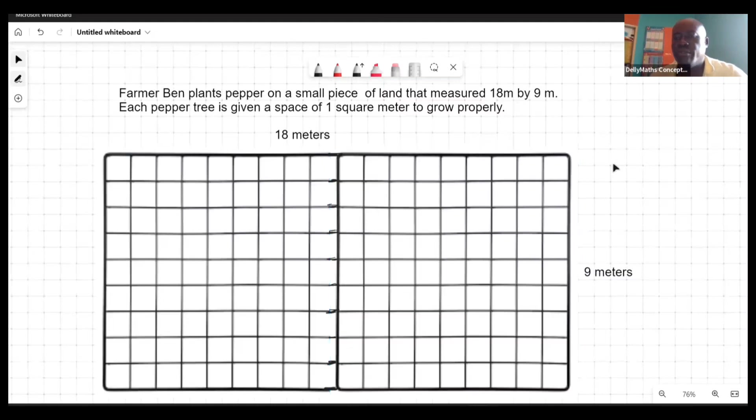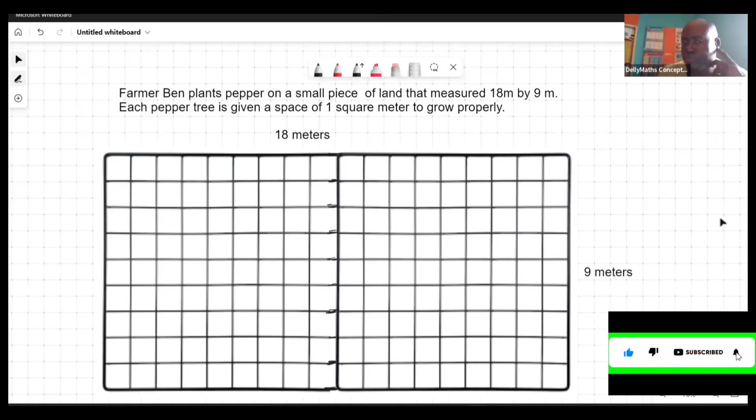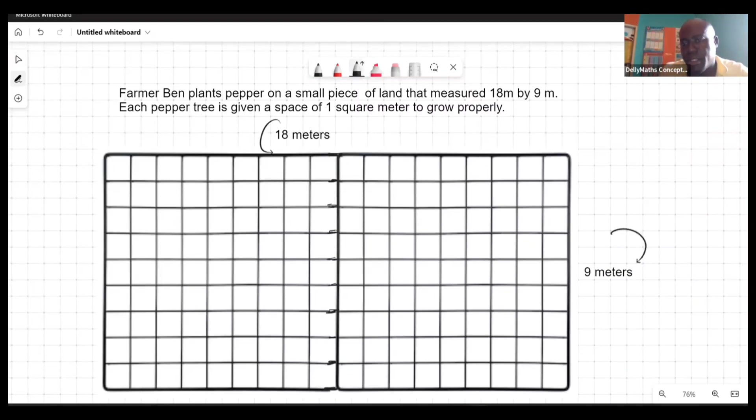It says Farmer Ben plants peppers on a small piece of land that measured 18 meters by 9 meters. We're seeing the measurements here. It says each pepper tree is given a space of one square meter to grow properly.